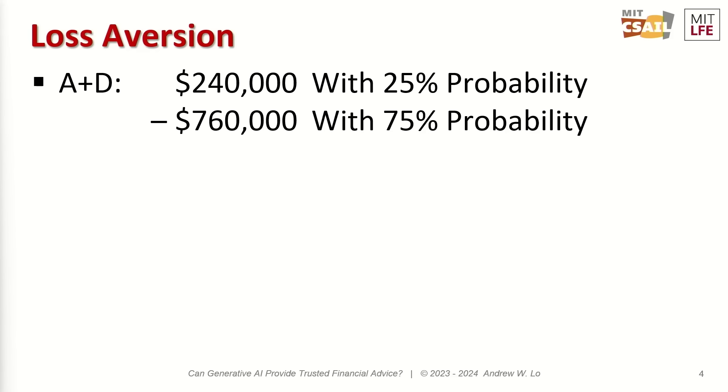Now, this is just a matter of risk preferences, right? It doesn't seem like there's a right or wrong answer. But let me show you what most of you picked — those of you who picked A and D. Those two choices are equivalent to a single lottery ticket that gives you $240,000 with 25% probability and will cost you $760,000 with 75% probability.